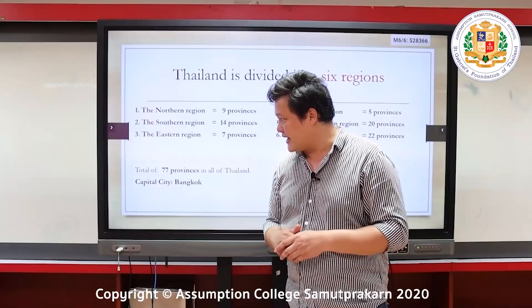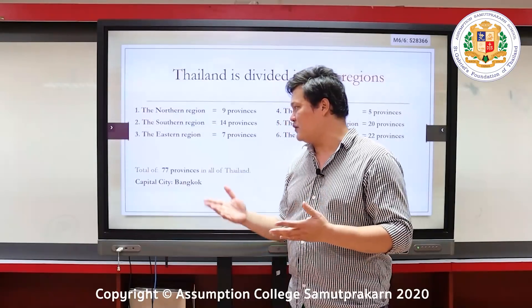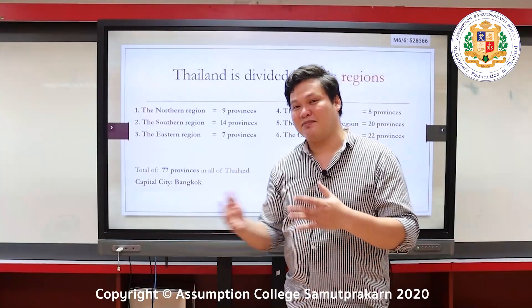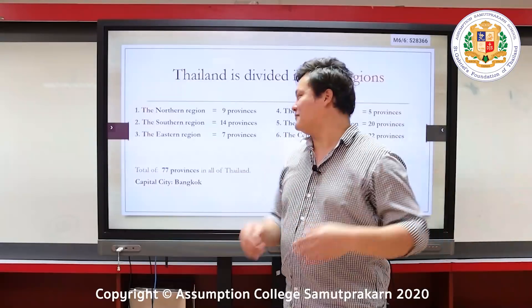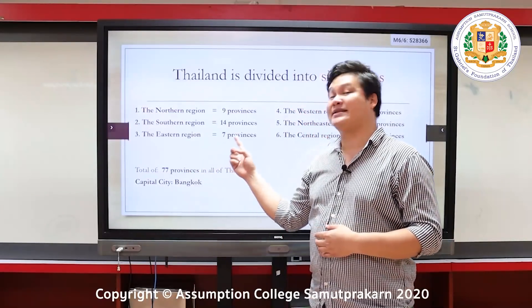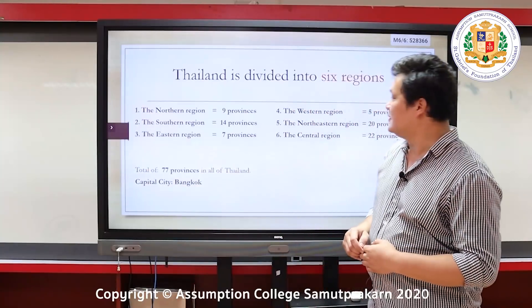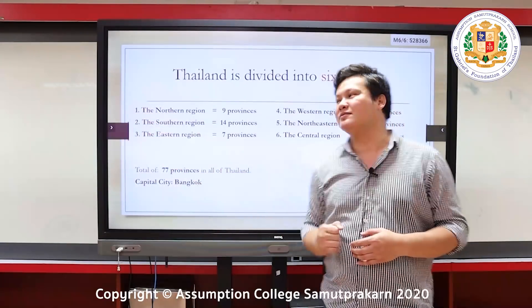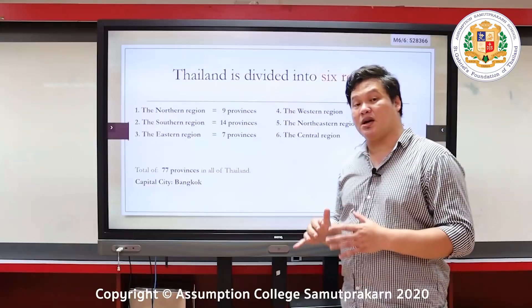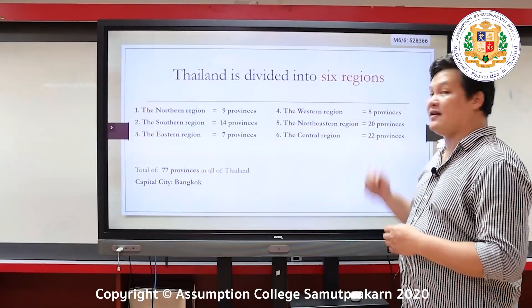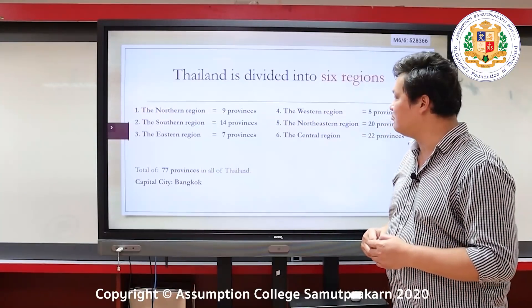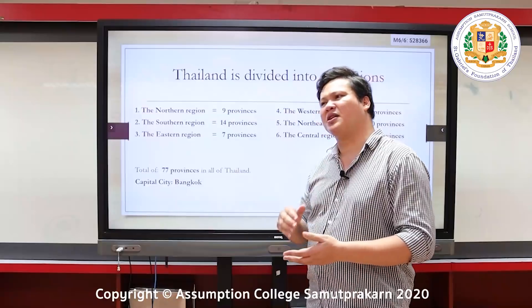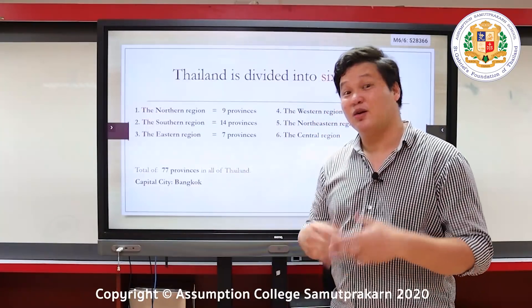The third region is the eastern region. Familiar provinces include Chonburi and Rayong — where Pattaya is, where we can go swimming. It has seven provinces. The fourth region is the western region, which has the least number of provinces: five. Famous provinces in the western region include Ratchaburi.